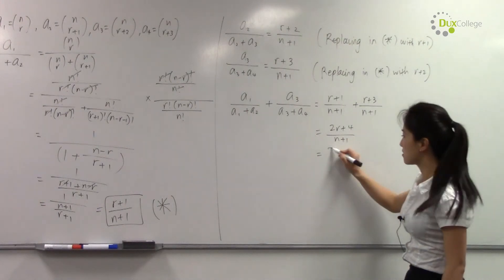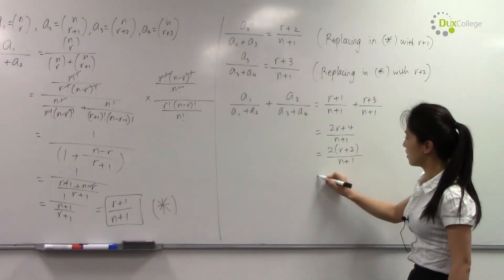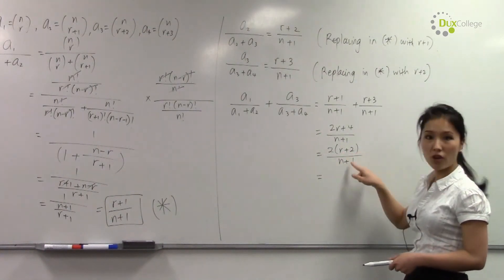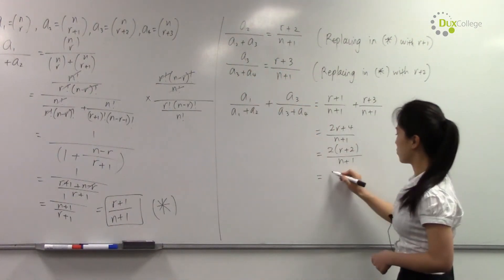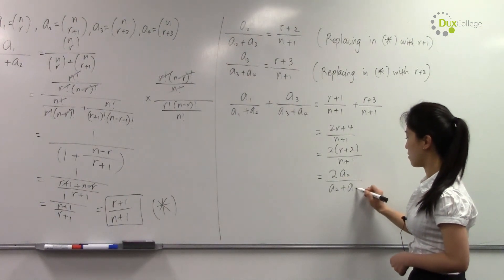Taking 2 out. And as you can see here, (r+2) over (n+1) is equal to a₂ over (a₂+a₃). So that's 2 times a₂ over (a₂+a₃). And that's the end of our proof.